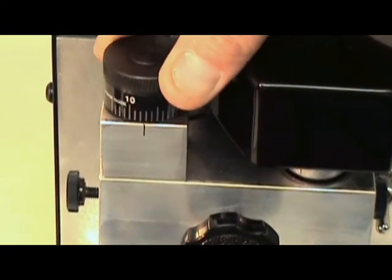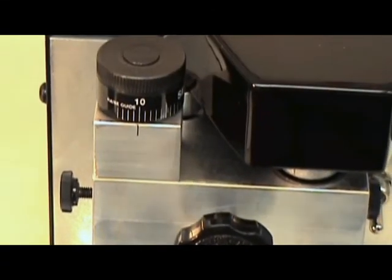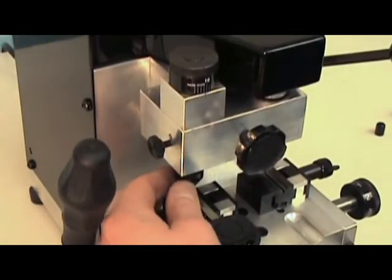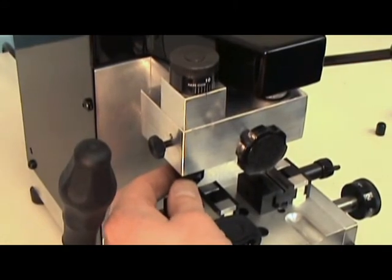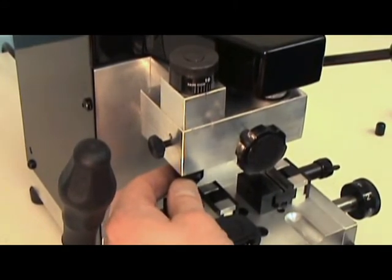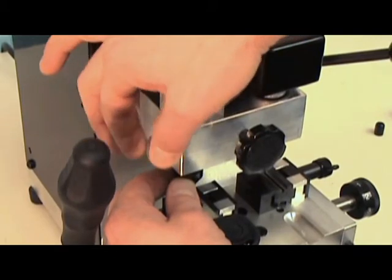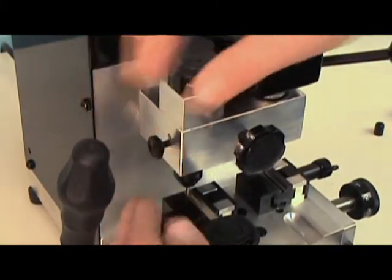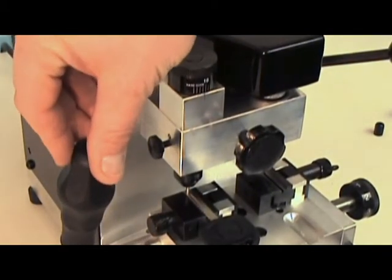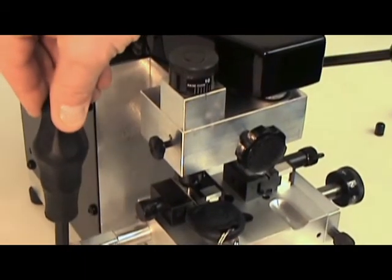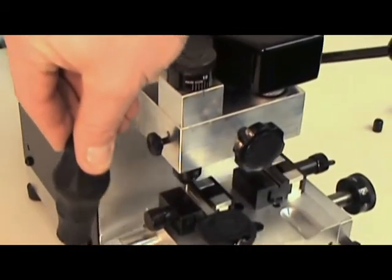Next, turn the dial on the upper left of the machine to the 10 position. By turning the dial at the upper left of the machine, we've given ourselves 10 thousandths of clearance between the guide and the key. Lift up on the guide and lock it into this position with the lock nub on the left side of the machine. We've now eliminated the spring pressure on the guide and can move our carriage back and forth easily.